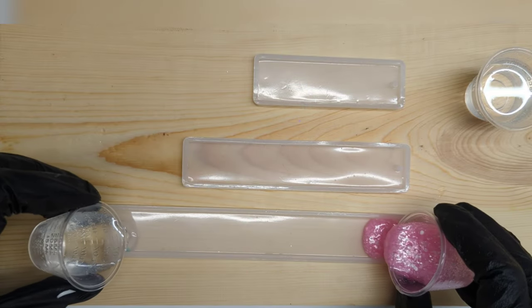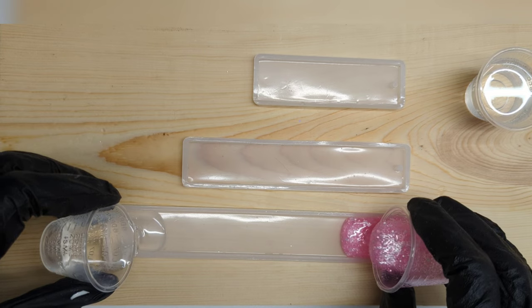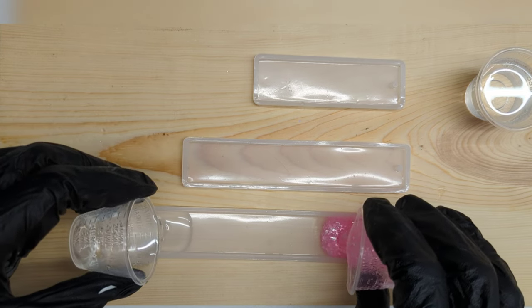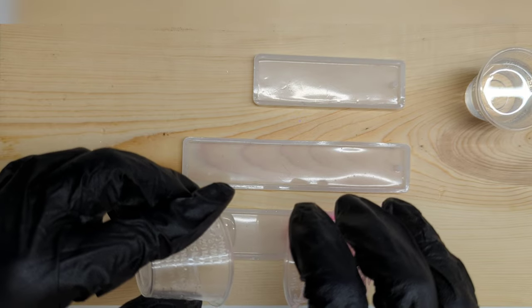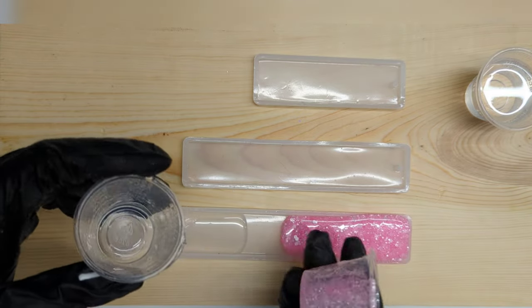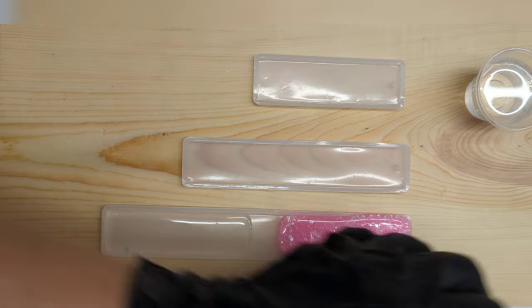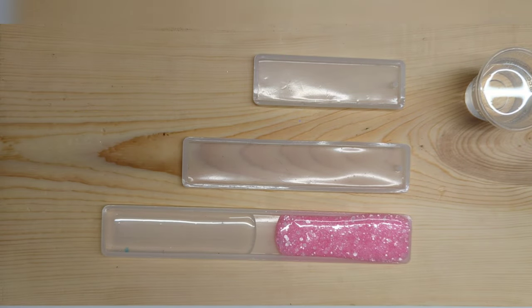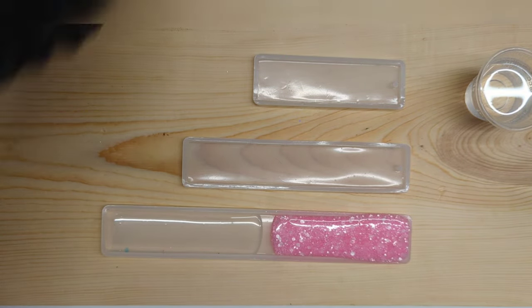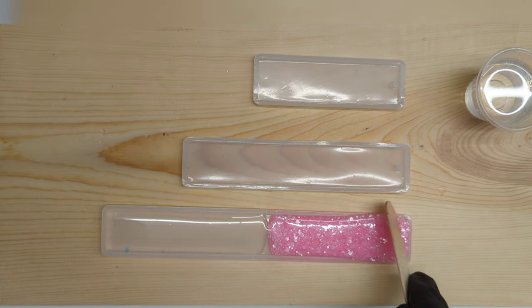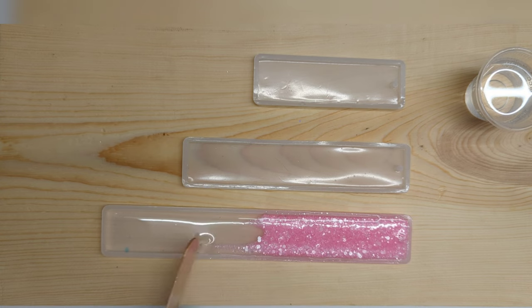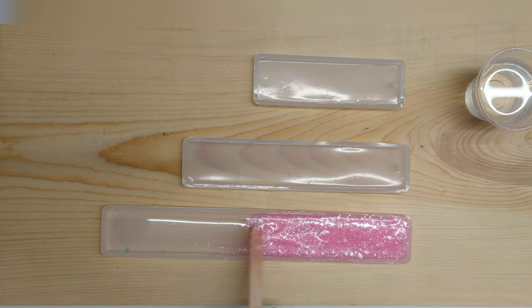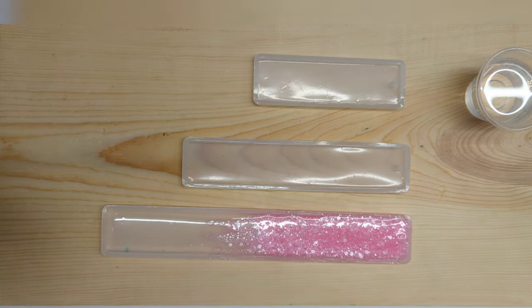From here, just mix it really well. I'm going to pour this one in half and half at the same time, so half of that 20 milliliters of epoxy with the pink glitter and then the other 10 that is remaining is just our clear epoxy on the other side. I'm going to take a popsicle stick and just kind of drag the pink into that clear so it helps soften that line.